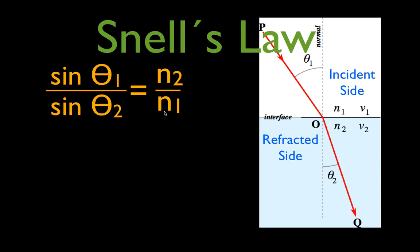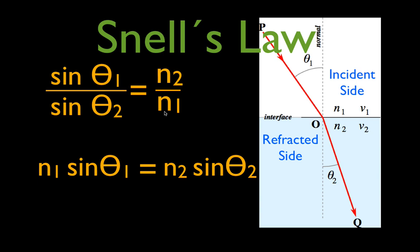When we use Snell's Law, we usually don't leave it in that form — we write it as N1 sine(theta1) = N2 sine(theta2). We want to make sure we keep N1 and theta1 together on one side, and N2 and theta2 together on the other side. N1 and theta1 are labeled on the incident side, and the other two values are from the refracted side.